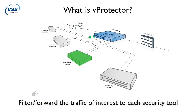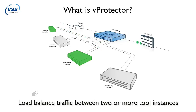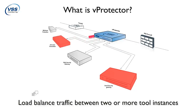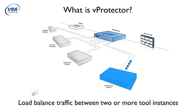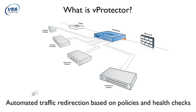Traffic flows can also be load balanced between multiple security devices of the same kind for high availability or capacity scale-out configurations. For example, multiple 1 gigabit security tools can now share the load and support higher throughput links such as 10 gigabit connections. Moreover, security can be made more fault tolerant, as traffic can be redirected automatically based on user-defined policies and health checks. This includes a fail-open or fail-closed policy configuration, giving you control to set whether traffic flows continue circumvented or are disrupted in the event of a security device or network failure.